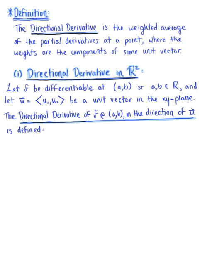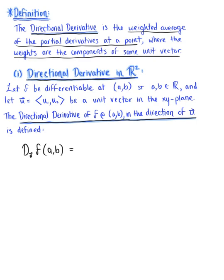The directional derivative of a function f at some point (a, b) in the direction of vector u is defined as follows. We define this with a capital D sub vector u of the function f at the point (a, b). Since it's the weighted average of the partial derivatives at a point where the weights are the components of the unit vector, it's a linear combination of the gradient and our unit vector. The vector operation that provides us with a linear combination is the dot product. So we define the directional derivative as the dot product of the gradient vector at some point (a, b) with the unit vector.